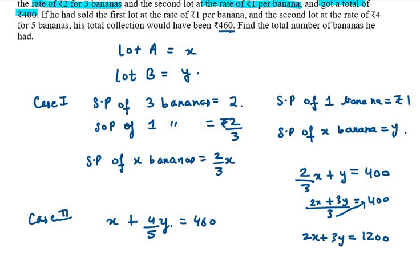Again, we need to simplify this part. It will be 5x plus 4y equals 5 goes up, 460 times 5 is 2300. This is my second equation.